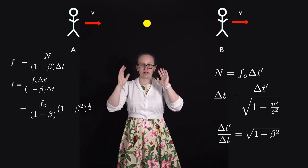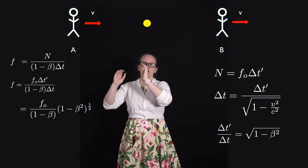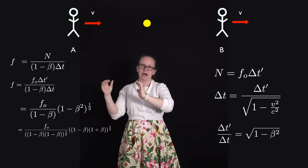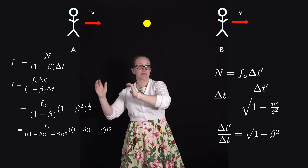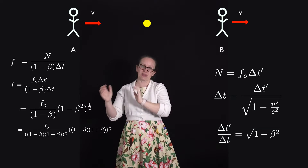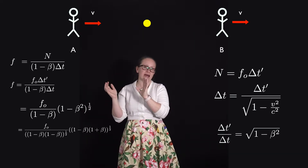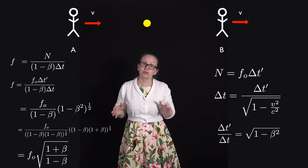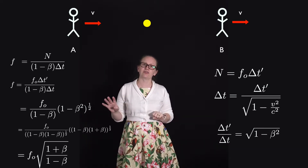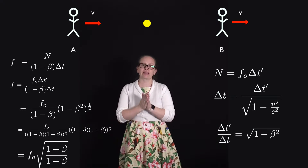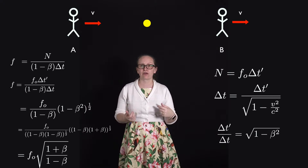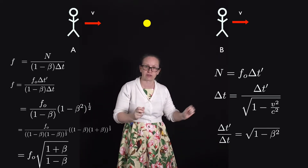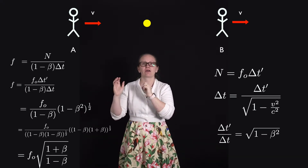Doing a little algebra: since (1 minus beta squared) equals (1 minus beta)(1 plus beta), we can write (1 minus beta) in the denominator as the square root of (1 minus beta) times (1 minus beta). The factor of (1 minus beta) cancels, leaving F equals F0 times the square root of (1 plus beta) divided by (1 minus beta). Since F is larger than F0, we have a shorter wavelength — this is known as a blue shift, as the wavelength is shifted towards the blue end of the spectrum. So as a light source approaches an observer, we observe a higher frequency.